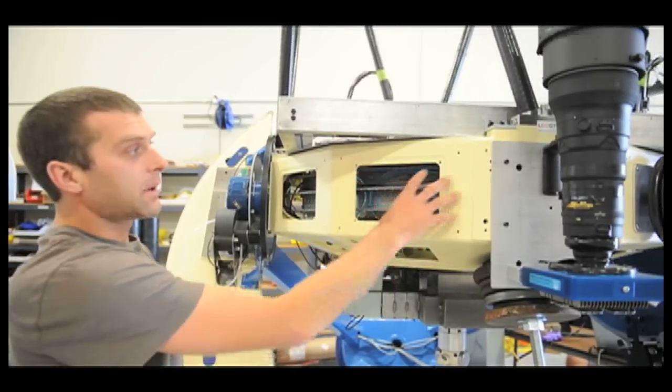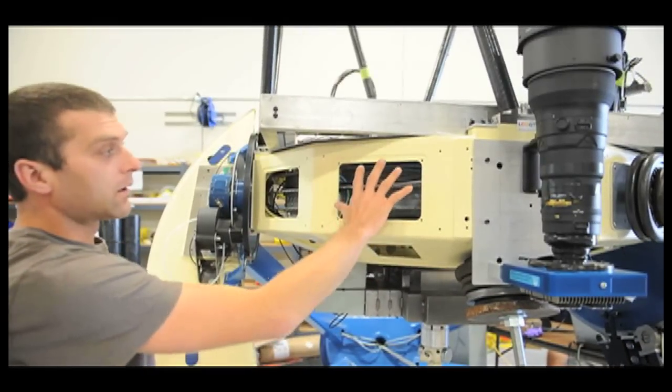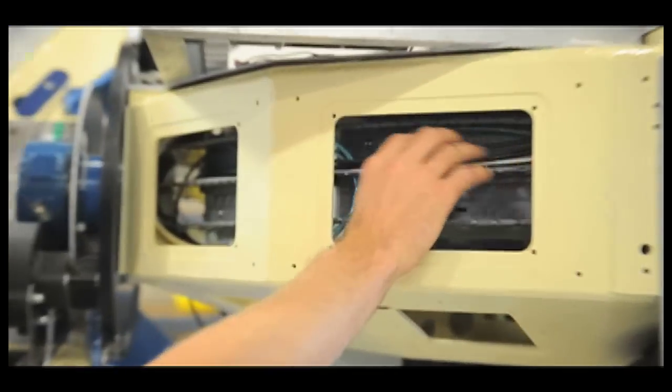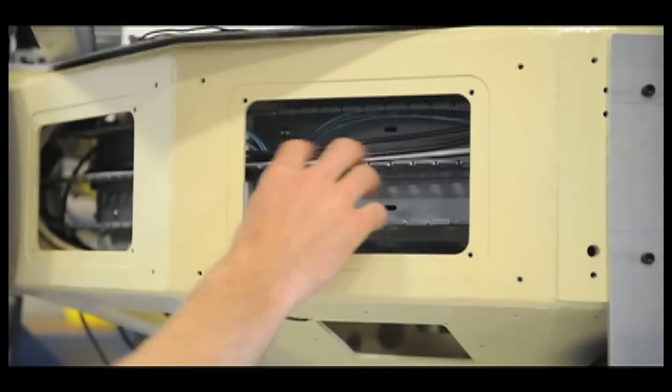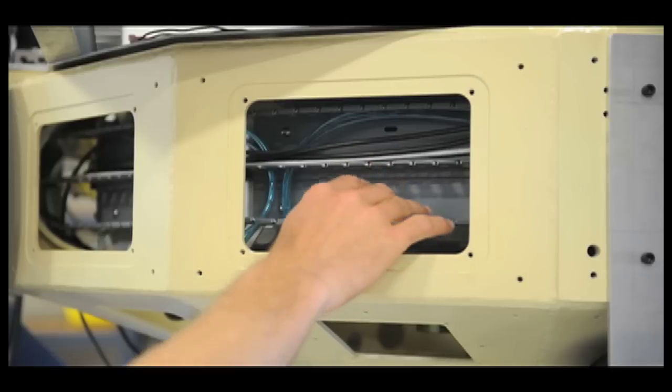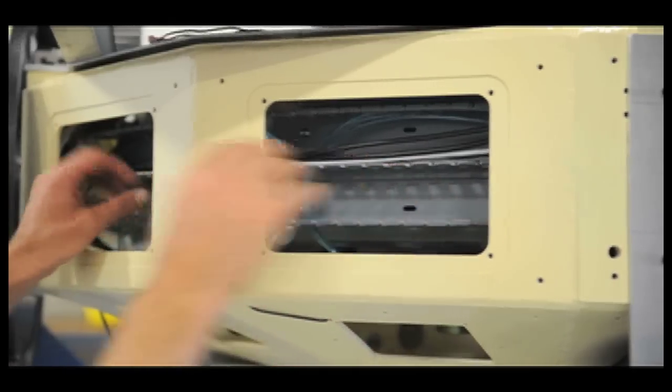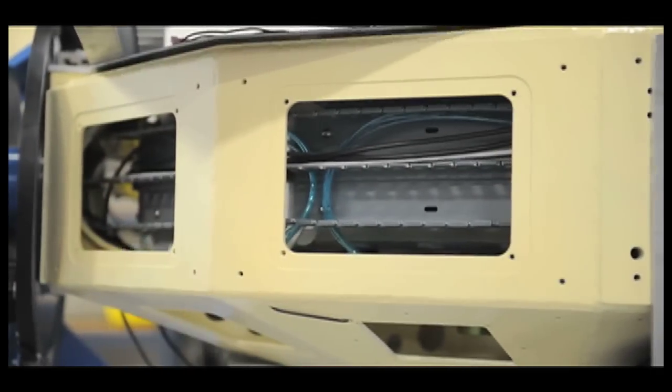These access panels in the mirror cell are spots where you remove the panel, you get to the cabling—electrical cabling inside here—either to remove or replace or implement something new. And those can be easily accessed through ten panels around the side of the telescope.